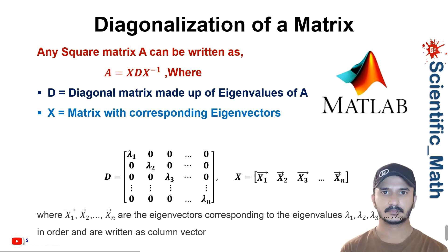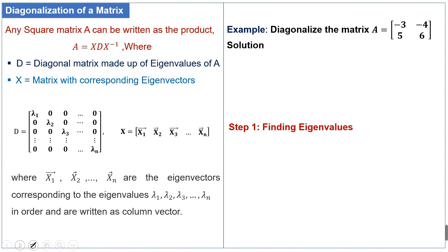Welcome to YouTube channel scientific_math. In this lecture we will discuss the diagonalization of a matrix — how we can diagonalize any square matrix. Any square matrix A can be written as the product A = X · D · X⁻¹, where D is the diagonal matrix made up of the eigenvalues of A. The diagonal entries of D are the eigenvalues of matrix A.